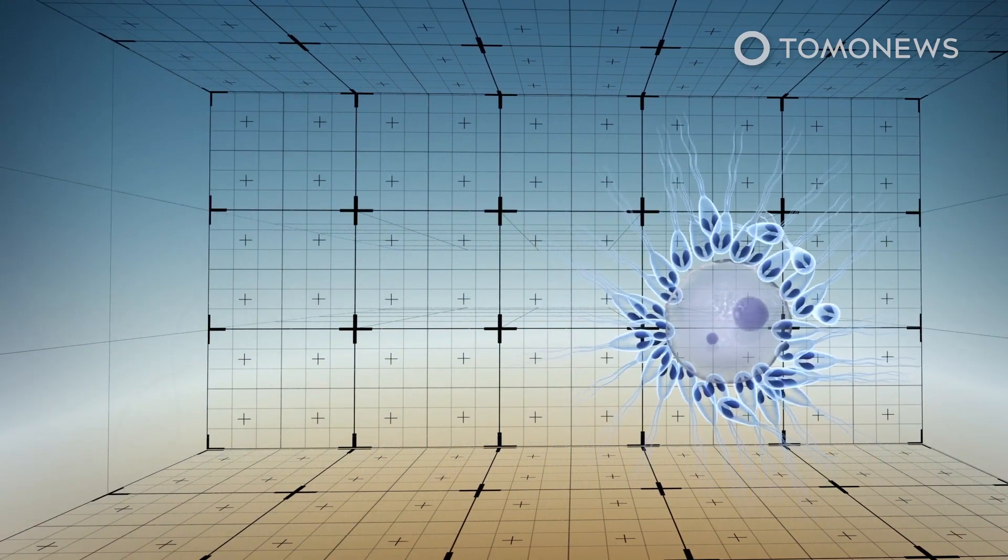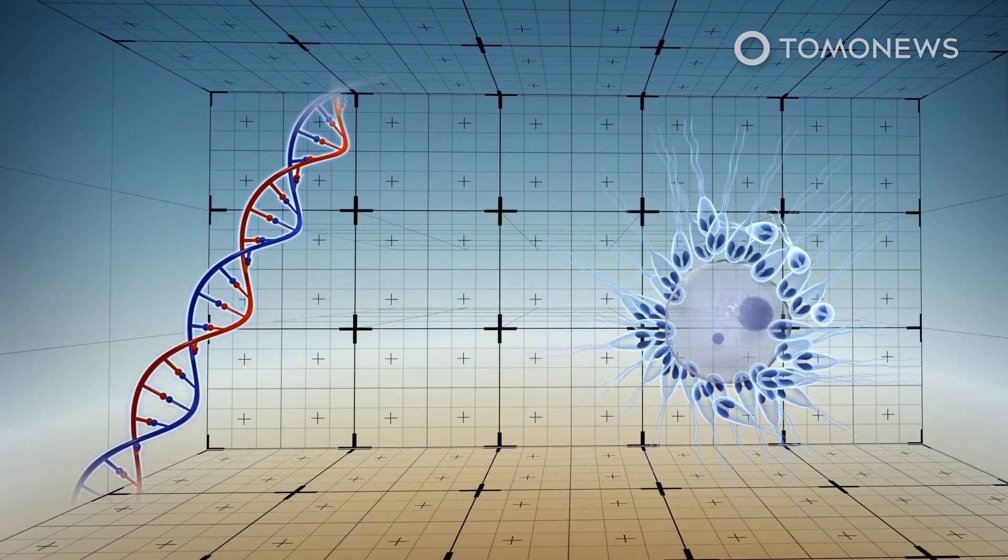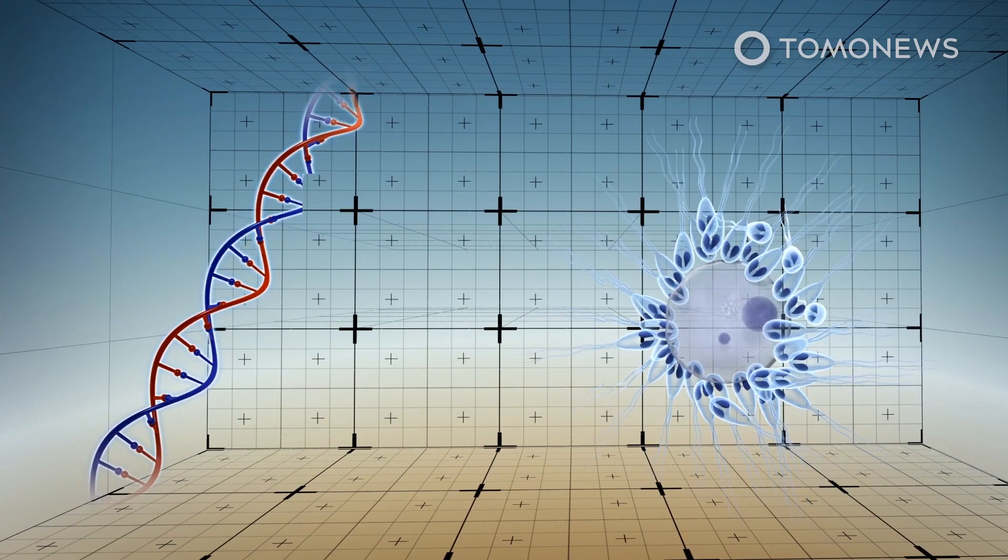This genetic simplicity allows the creature to reproduce quickly, an evolutionary advantage for parasites.